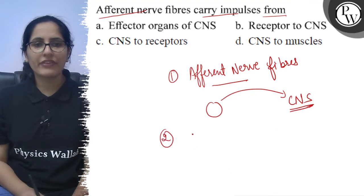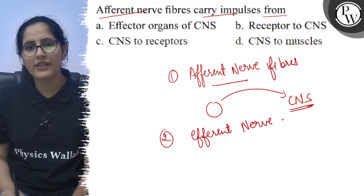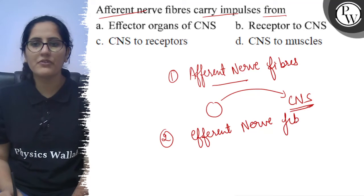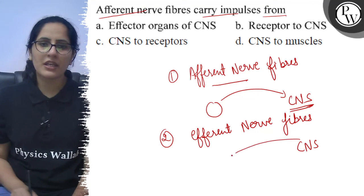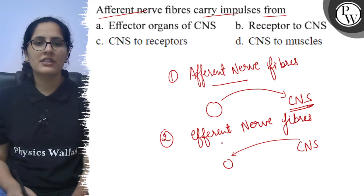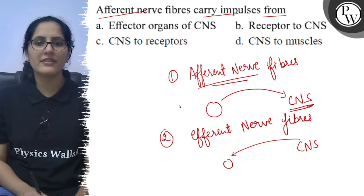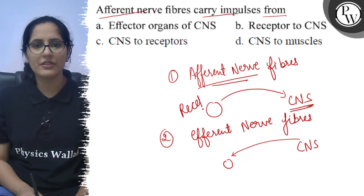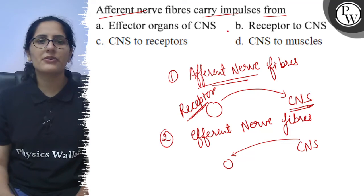And here are the efferent nerve fibers, that are also known as the motor neurons, and here the impulse goes from the central nervous system to the target organ, tissue or receptors. So for afferent nerve fibers, it is receptor to central nervous system.